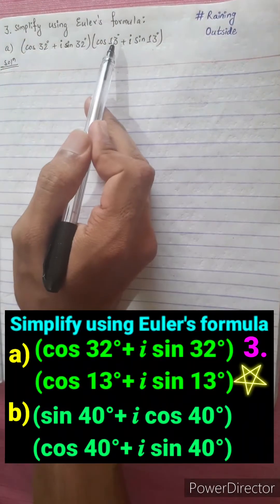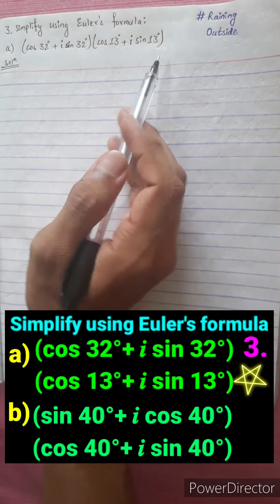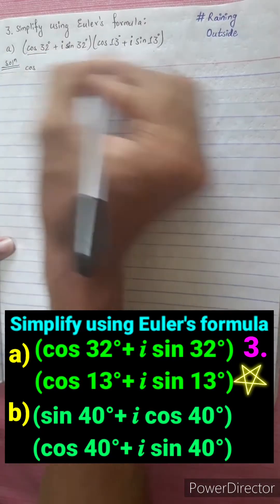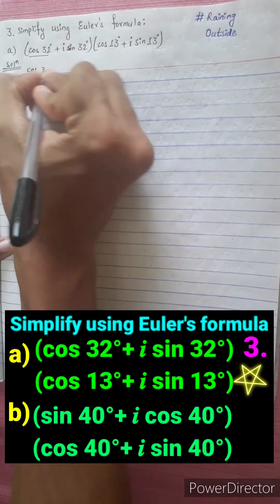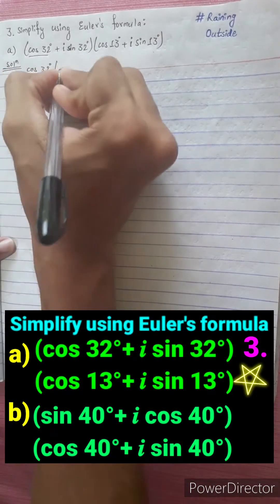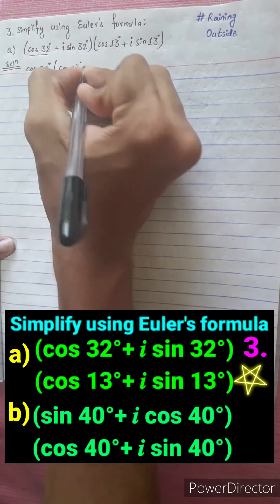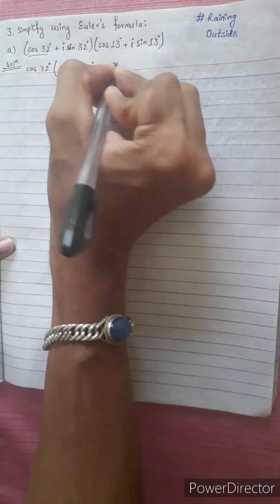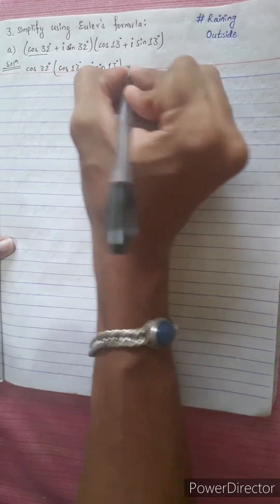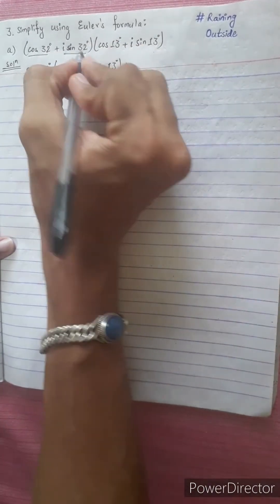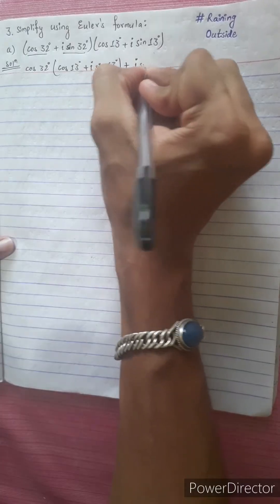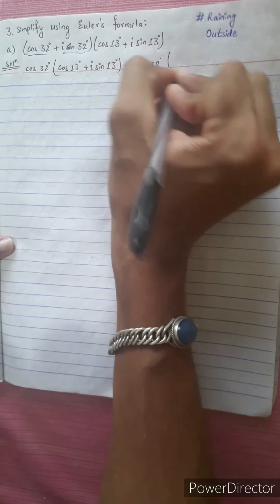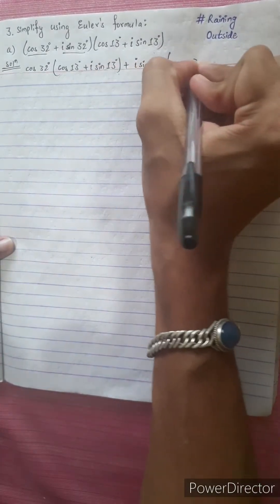Now we multiply cos 32 · cos 32 [cos 13]. Multiply cos 13. Then i sin 32, i sin 32, i sin 32 · cos 13.